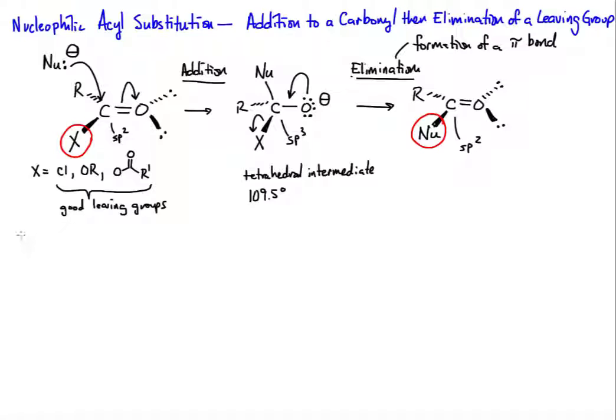So let's take a look at the leaving group ability of X. What makes something a good leaving group? We're going to consider ultimately the pKa of the conjugate acid of that leaving group. So that's going to be our oxidation state three functional group. Let's consider acid chlorides.